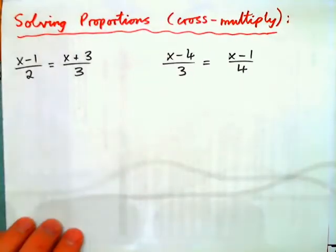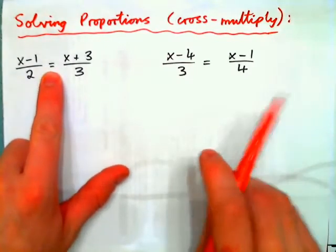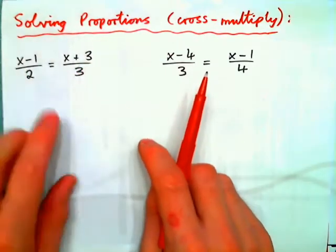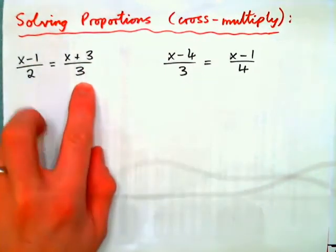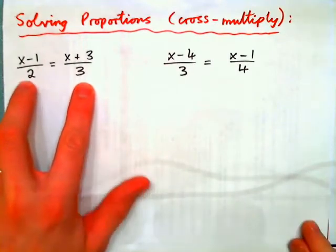So I am going to start here. And if we have this equation, an equation has an equal sign in it. This is a fraction, this is a fraction. If you have a fraction equal to a fraction, that means you have a proportion. When you have a proportion, you can cross multiply.